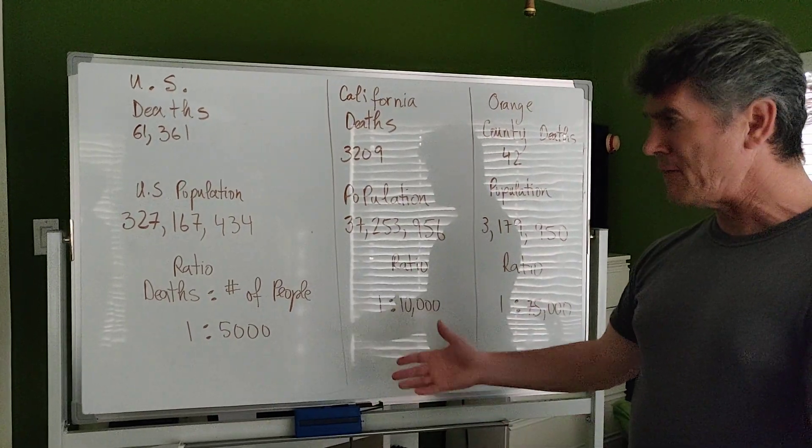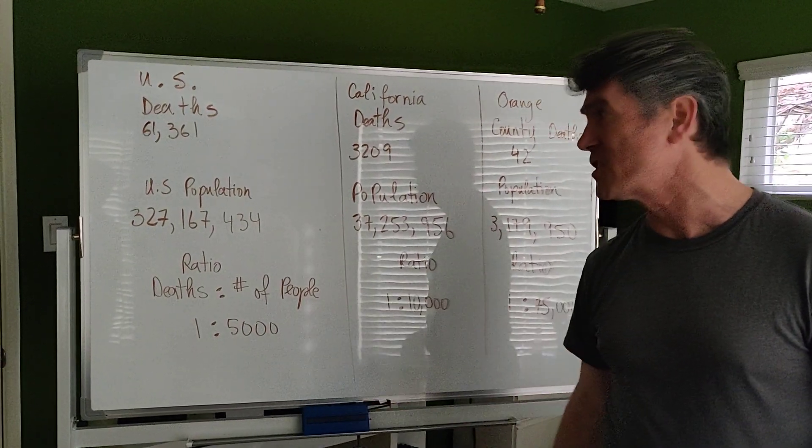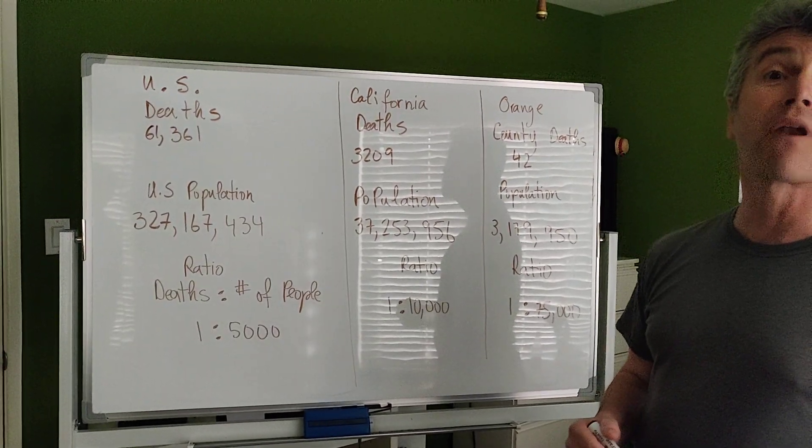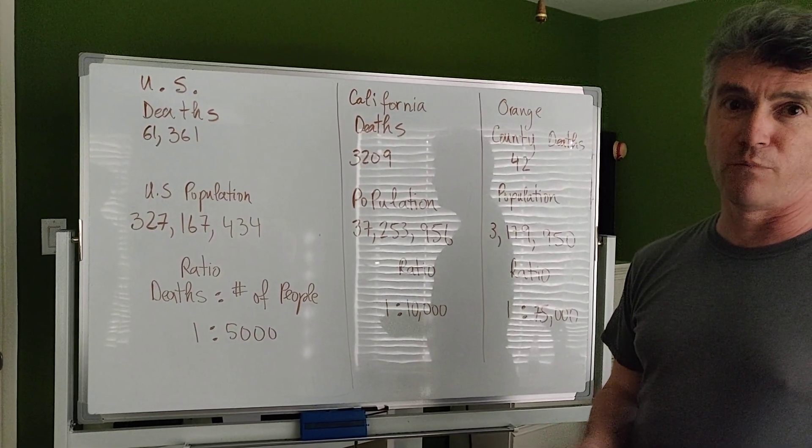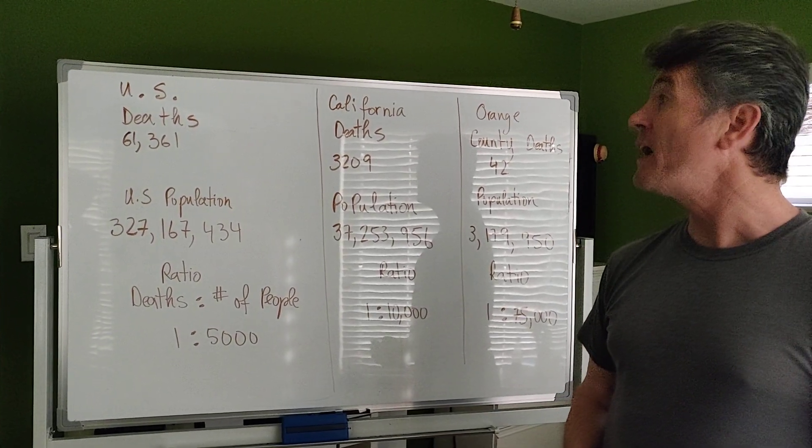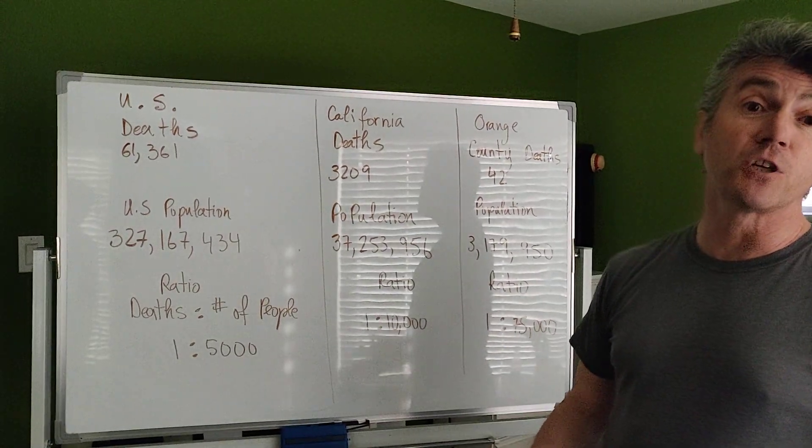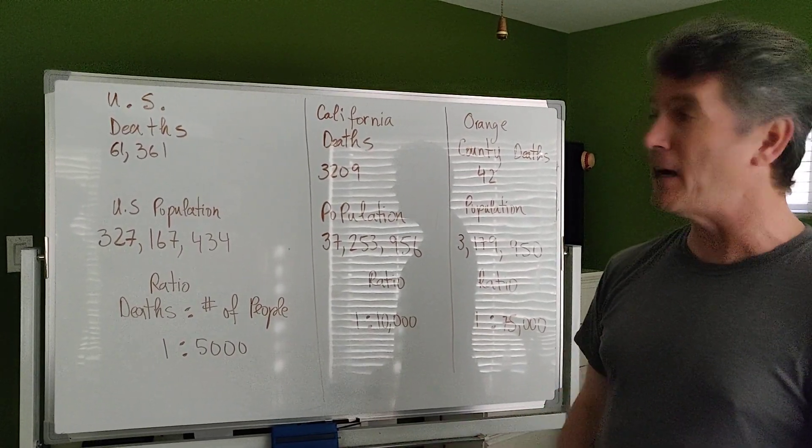Now, you might not be impressed or you might be very impressed. You should know that this is a lie. This is a lie because it does not apply equally to all numbers. I did math, but it's an illusion, because if I was to take out the New York and New Jersey deaths, the ratio would be different.